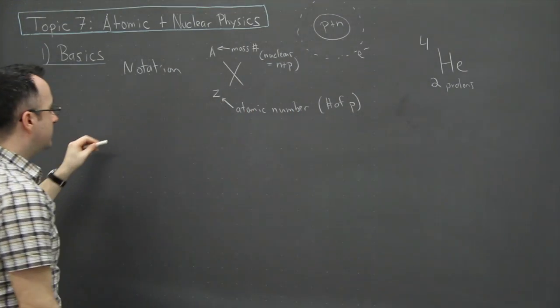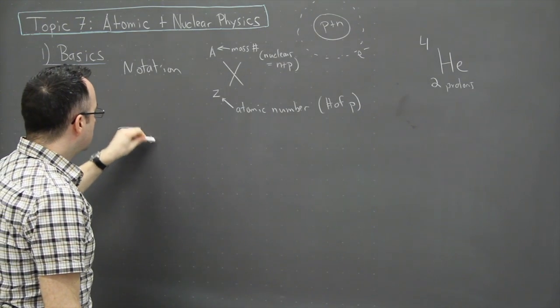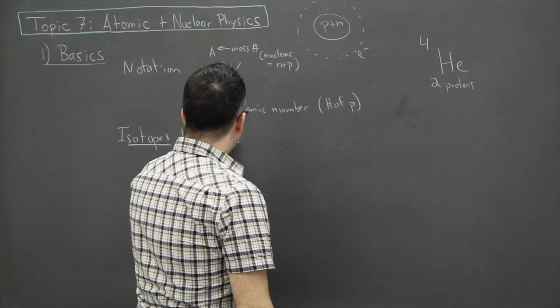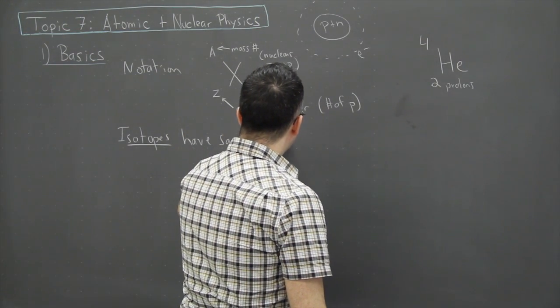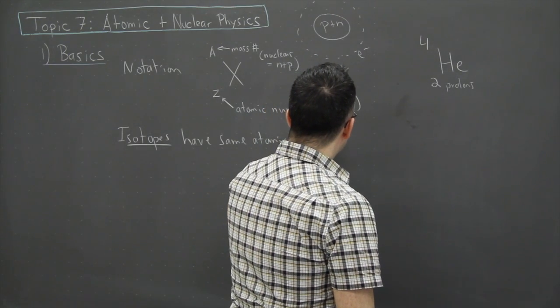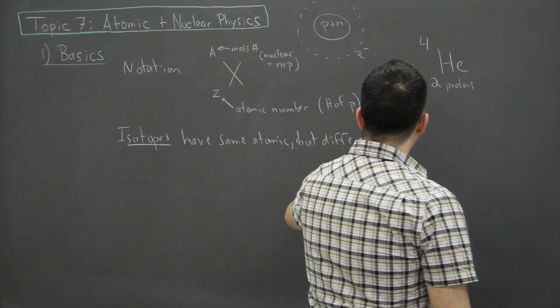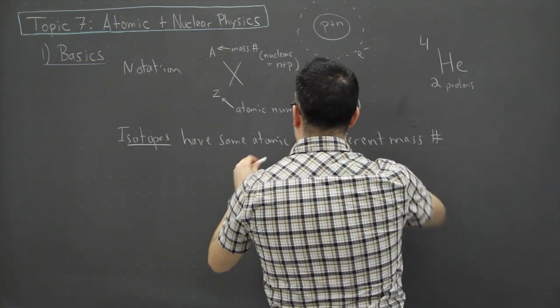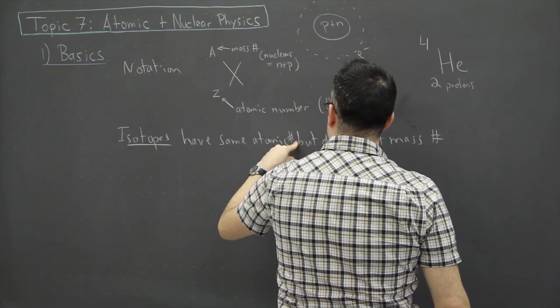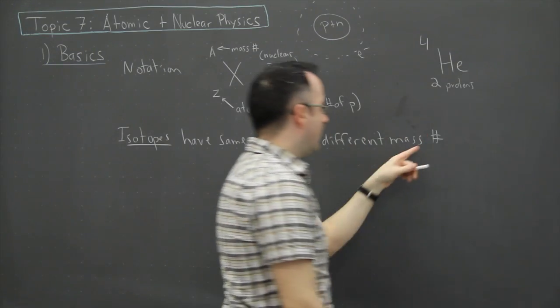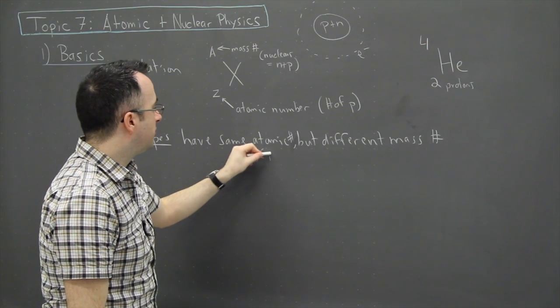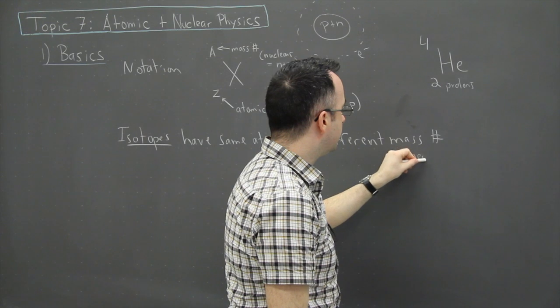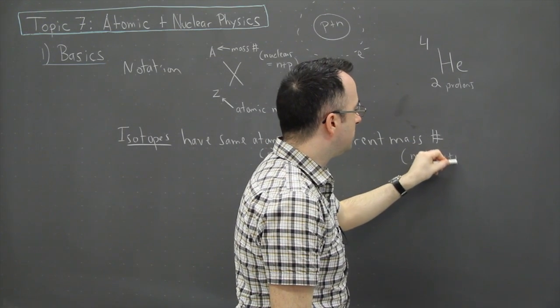Now we can have actually what are called isotopes. Isotopes have same atomic number but different mass number. Same atomic number but a different mass number. In other words, it's got the same number of protons but a different number of, well, it actually has a different number of neutrons, because of course it's neutrons plus the original protons.